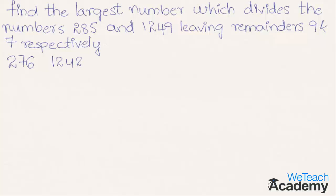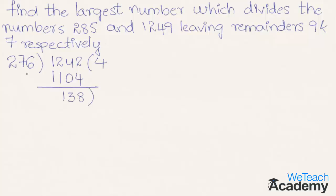In order to find the greatest common divisor, the larger number should be divided by the smaller number. So let us divide 1242 by 276. Here 276 four times is 1104, and by subtracting we get 138. Now dividing 276 by the remainder 138 — here 138 two times is 276.